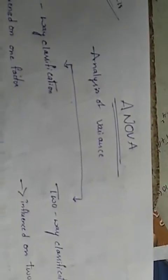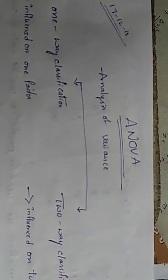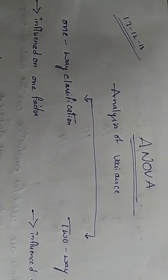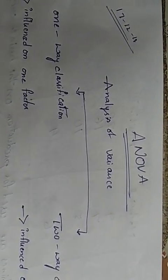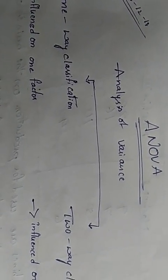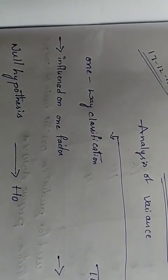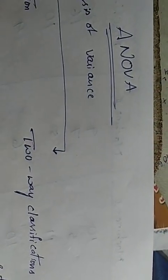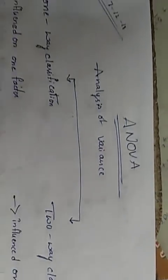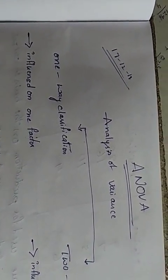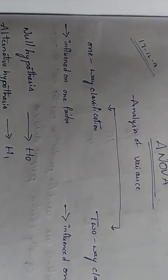Good morning and good afternoon friends. Today our topic is ANOVA and its different types. ANOVA means Analysis of Variance. It may be classified into two types: one-way classification and two-way classification. One-way classification is influenced by one factor, and two-way classification means influence on two factors.